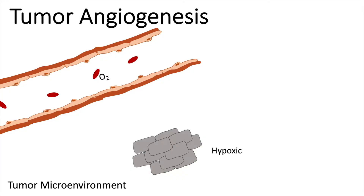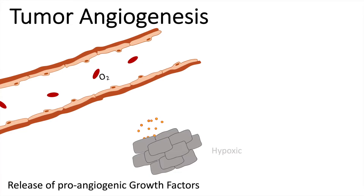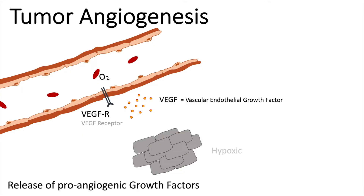Now the tumor has to react. The so-called angiogenic switch has to be activated, and this is done by releasing pro-angiogenic growth factors. One of the key players here is VEGF — the vascular endothelial growth factor. The endothelial cells have VEGF receptors with a tyrosine kinase domain on the inside and a ligand binding site on the outside, so these receptors can bind VEGF. VEGF receptors are exclusively expressed on endothelial cells and are essential for pathophysiological angiogenesis.